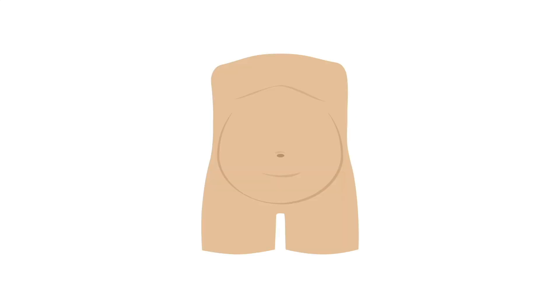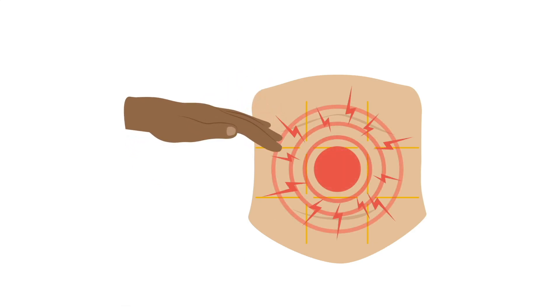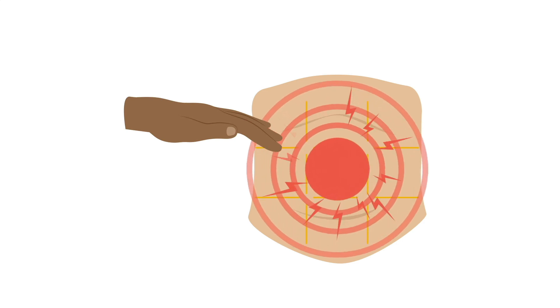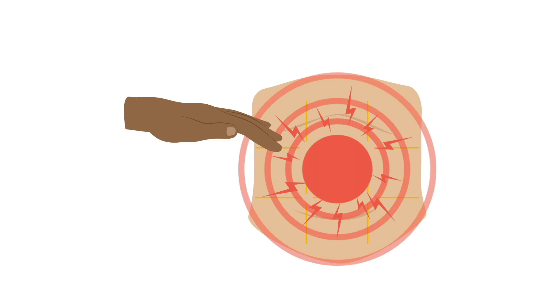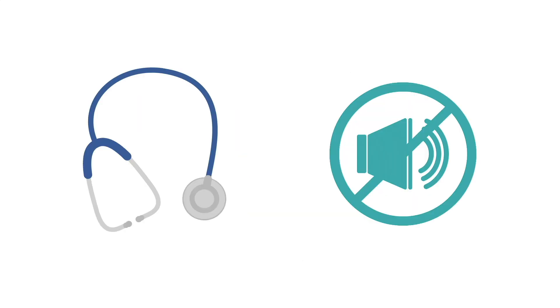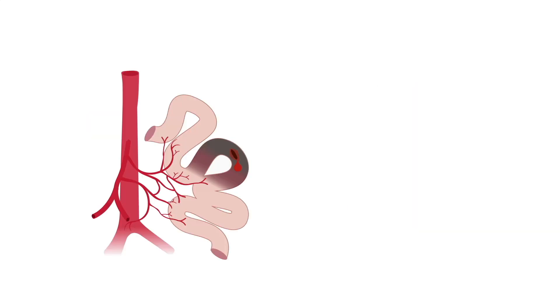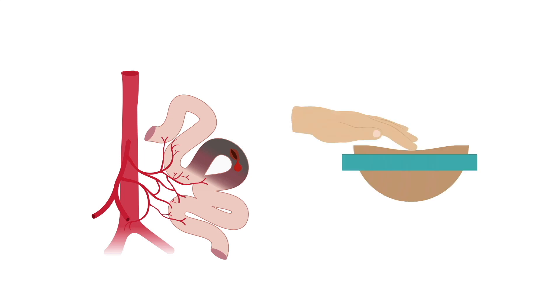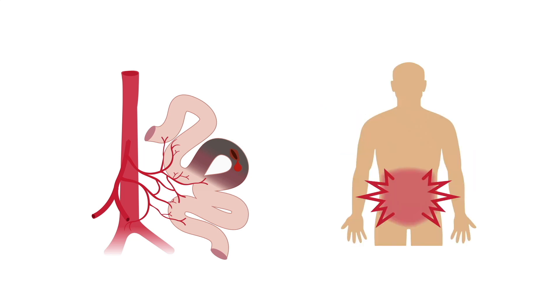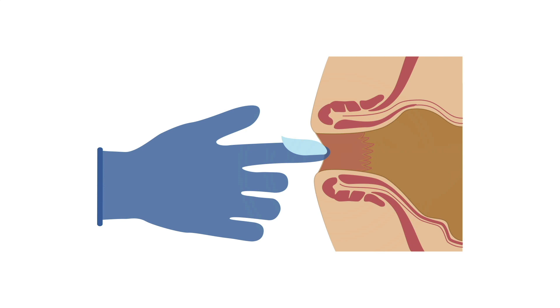On inspection, mild distension may be noted. On palpation, the patient may have pain around the periumbilical region. As bowel ischemia progresses, they may develop severe diffuse abdominal pain to palpation and significant distension. Bowel sounds may become absent. In cases of major complications such as perforation, a patient may have a rigid abdomen and peritoneal signs. A digital rectal exam should be performed to identify gross or occult blood.